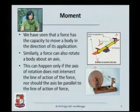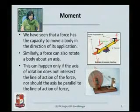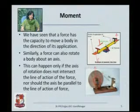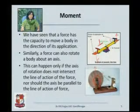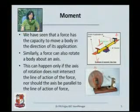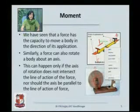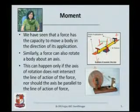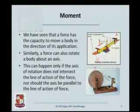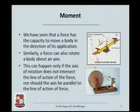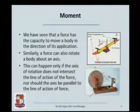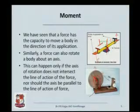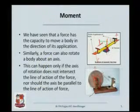Here comes the concept of moment. The moment is produced when a body rotates about an axis. This will happen only if the axis of rotation does not intersect the line of action of the force. The line of action of the force and the axis of rotation are not intersecting each other. Only if this condition holds will we have the effect of moment — that is, rotation of the body about a certain axis.